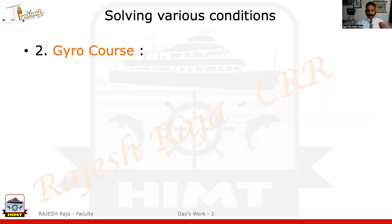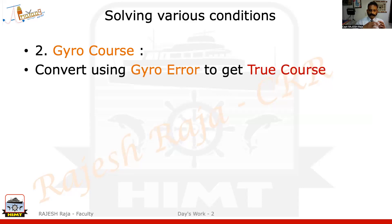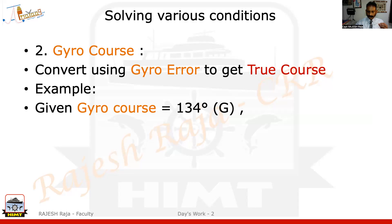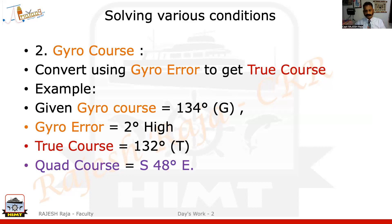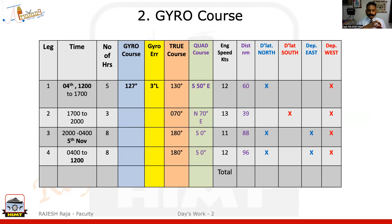The second condition is gyro course. To convert from gyro to true, I need the gyro error. For example: gyro course 134°, error 2° high — meaning gyro is showing 2° higher than true — so negate it: true course is 132°. Another example: gyro course 127°, error 3° low — gyro is showing lower — so add 3°: true course 130°. Convert to quadrantal course — South 50° East — then proceed.